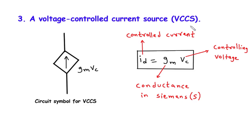A voltage-controlled current source consists of a circuit element that generates a current proportional to the voltage applied to it. This relationship is at the heart of the VCCS and is expressed through the equation ID equals GM into VC. Here, ID represents the controlled current, while VC stands for the controlling voltage.